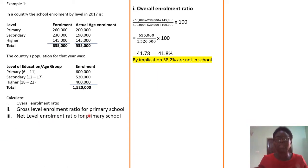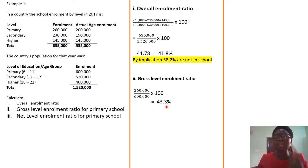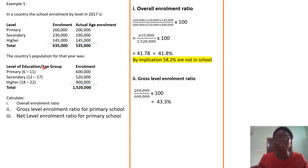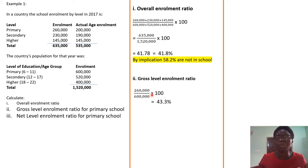The second one is the gross level enrollment ratio for primary school. This time we are looking specifically at the primary school level — it is no longer general. It is gross because not all 260,000 fall within the age of 6 to 11, but we take the total number enrolled regardless of age. So: 260,000 over 600,000, which gives you 43.3%.